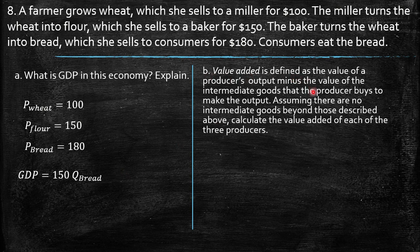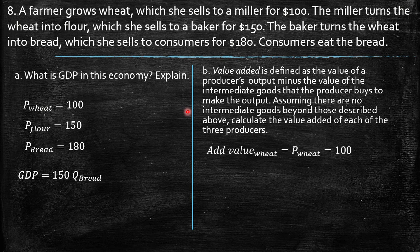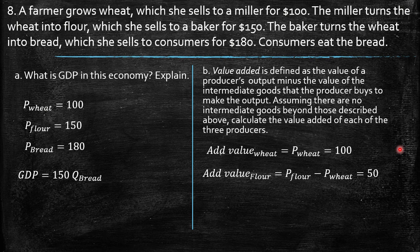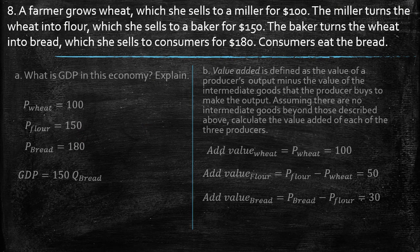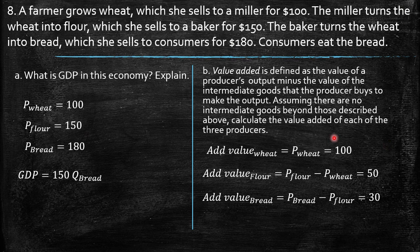Value added is defined as the value of a producer's output minus the value of intermediate goods the producer buys to make the output. Assuming no other intermediate goods, calculate the value added of each of the three producers. The value added of wheat is $100, since it starts from zero. The value added for flour is $150 minus $100, which is $50. Then bread: $180 minus $150, which is $30.